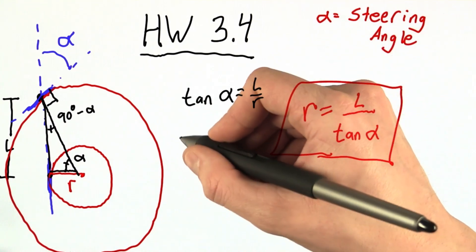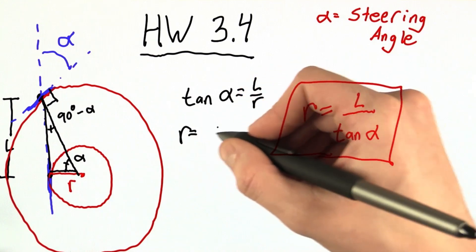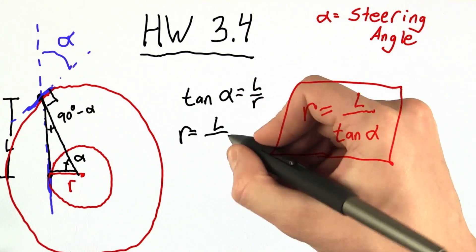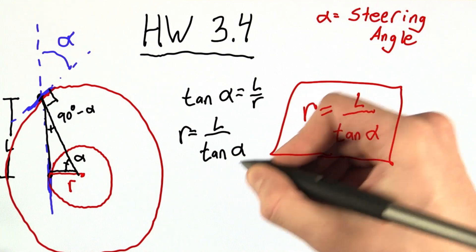We manipulate this equation a little bit, and we find that the radius of curvature is equal to the length of the vehicle over the tangent of the steering angle.